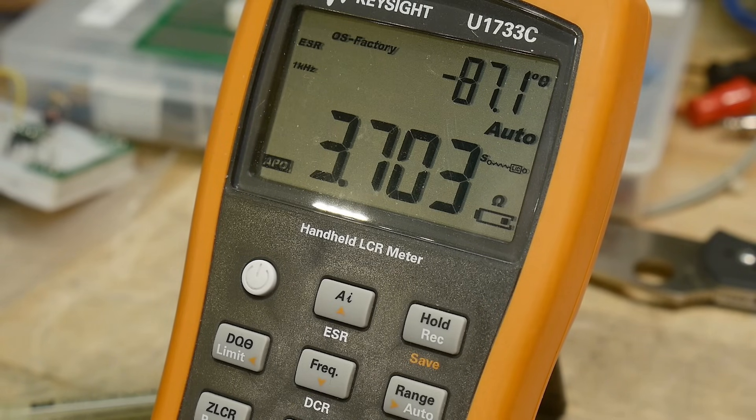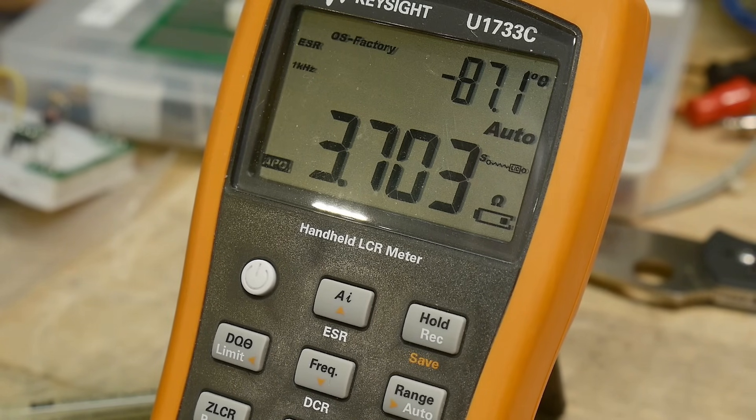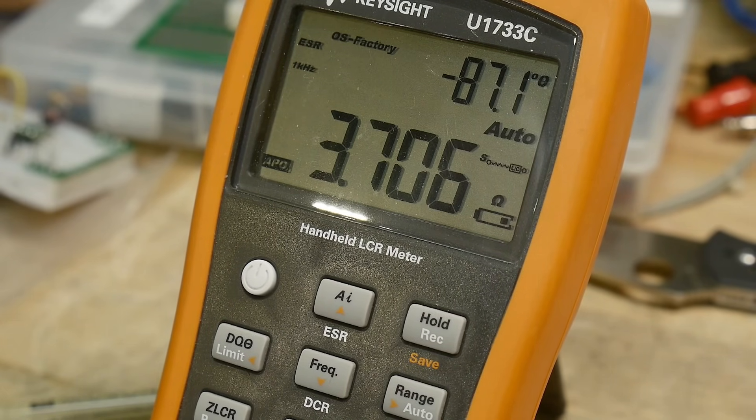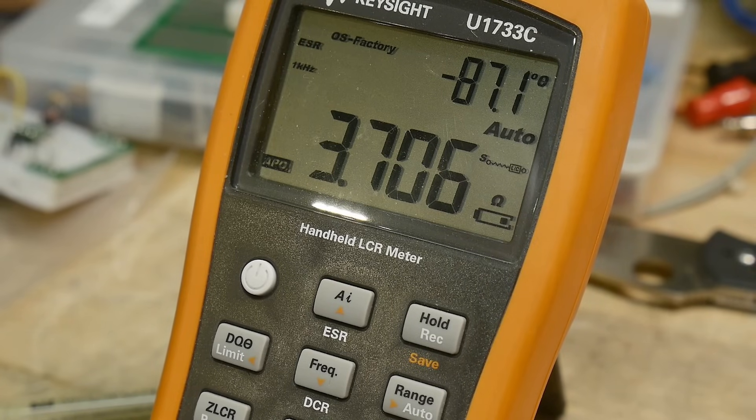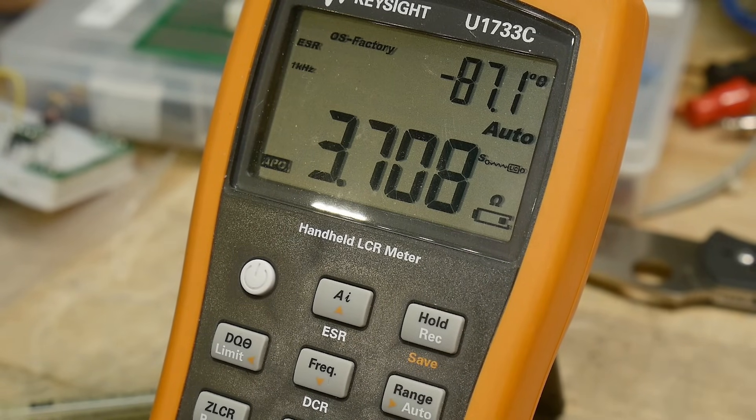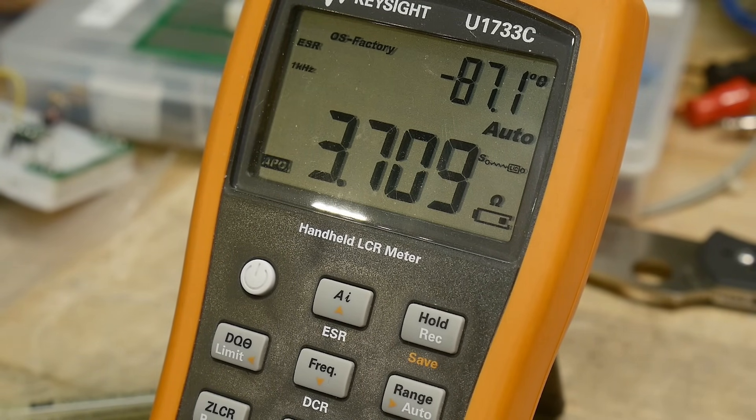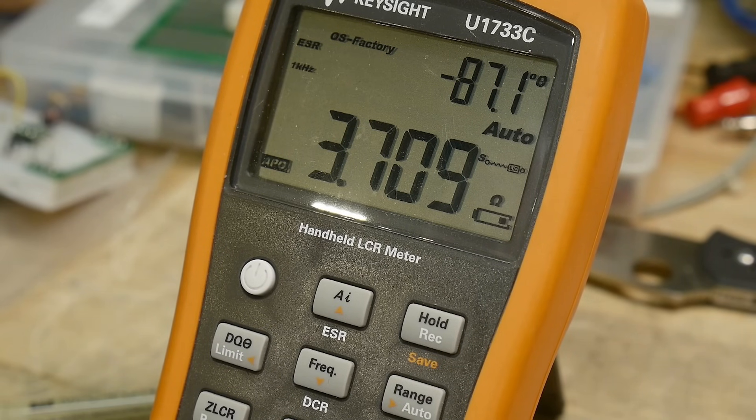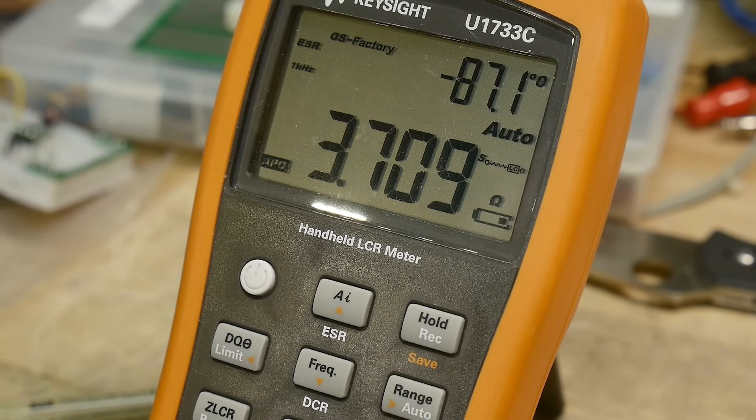Now 3.7 ohms is way, way far away from milliohms. And the capacitors I was using in the video that I got the comment from were 1 microfarad tantalum capacitors, and they're going to be up around 4 or 5 ohms. So the ESR value of a tantalum capacitor is heavily dependent on the value of the capacitor, how many microfarads the capacitor has.